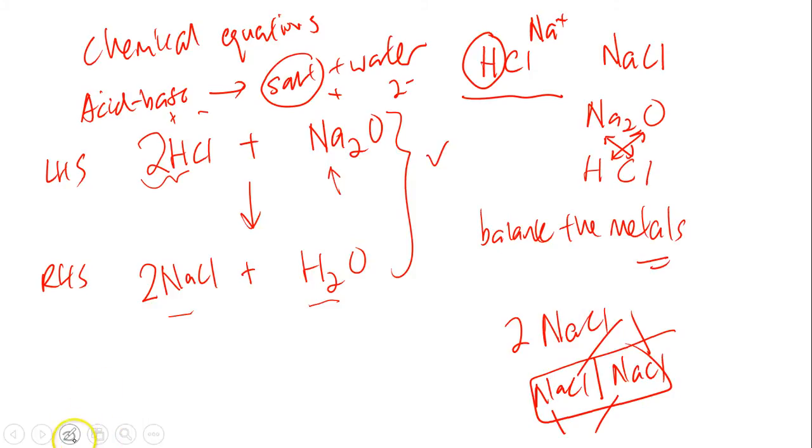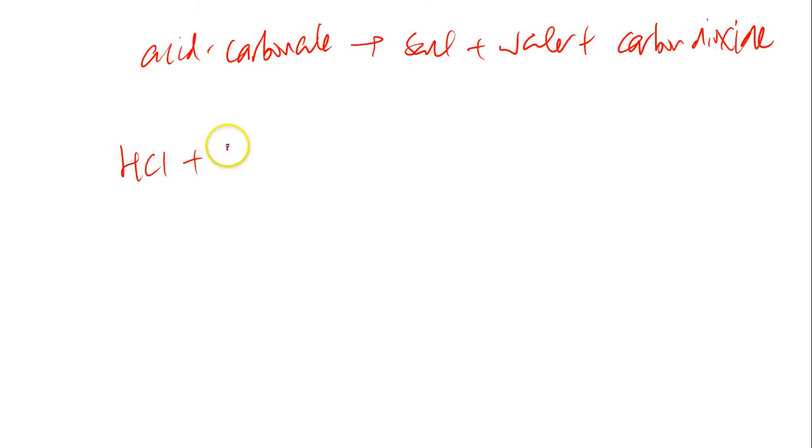The next equation you need to know is the acid-carbonate reaction. Acid-carbonate reaction gives us salt, water, and carbon dioxide. Let's have a simple example: HCl plus Na2CO3, sodium carbonate. Salt, water, carbon dioxide. We know water is H2O, carbon dioxide is CO2. So what could be the salt? Again, if you do not know, we can try the simple crossing. If you cross, the front takes the back and the back takes the front. We will have NaCl.